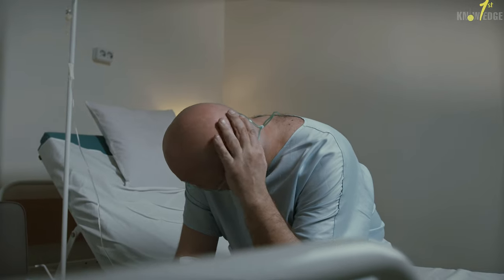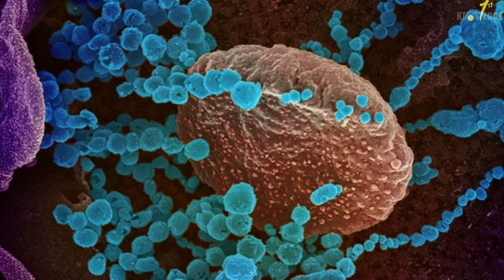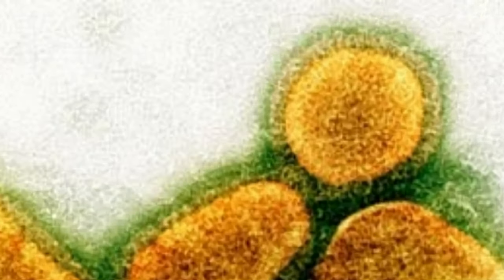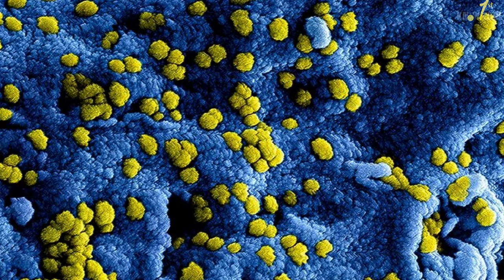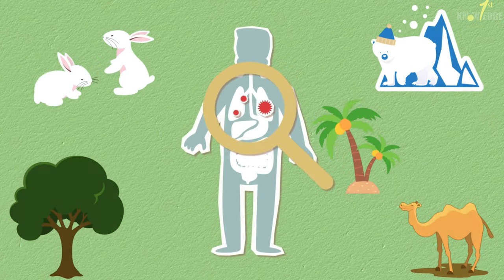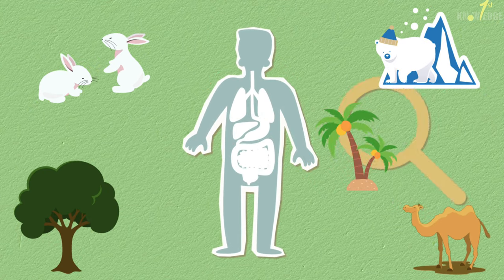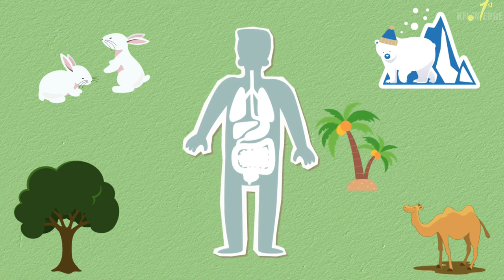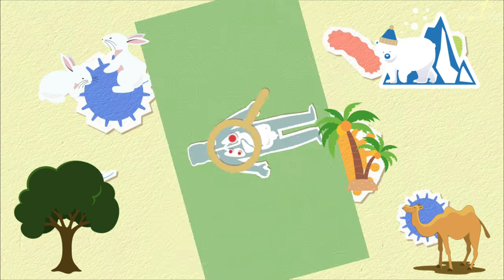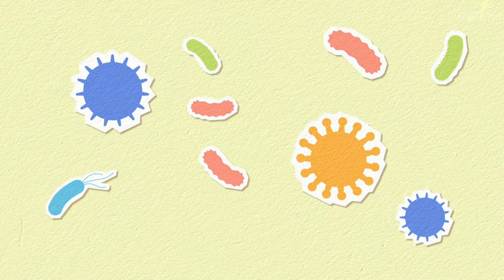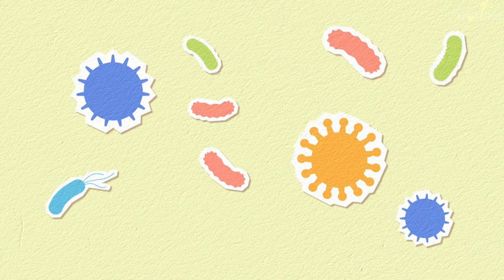A virus is a submicroscopic infectious agent that replicates only in the living cells of an organism. The virus infects all species, from animals and plants to microorganisms, including bacteria. Viruses are found in almost every ecosystem on Earth and many of them are biological factors.